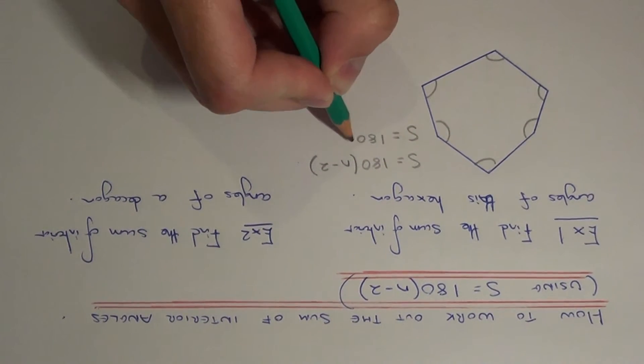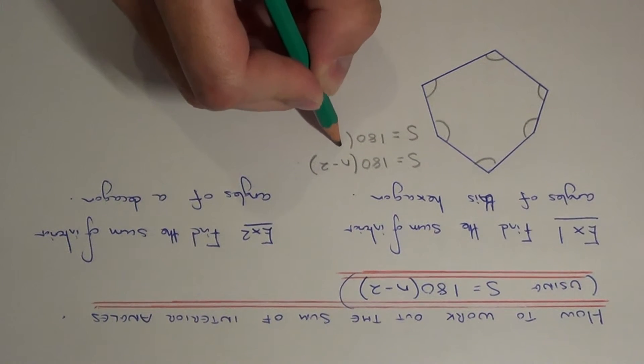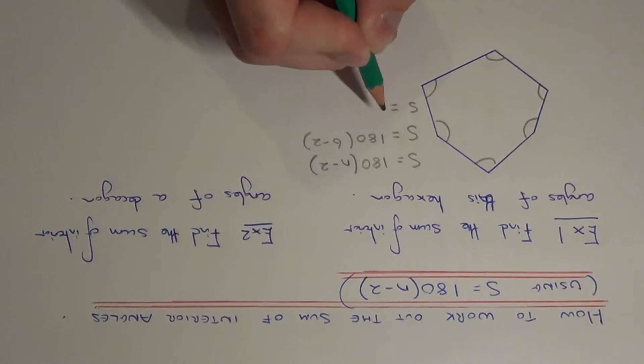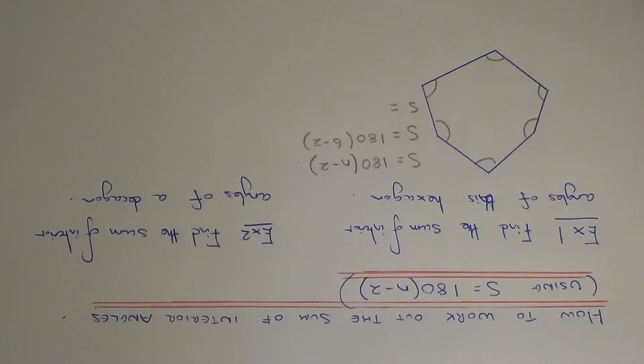So our next line would be 180 bracket 6 minus 2, so 6 minus 2 is 4.